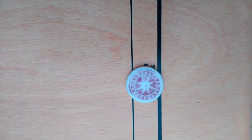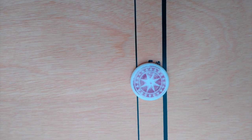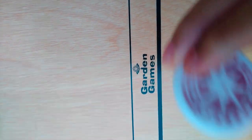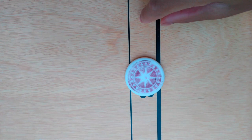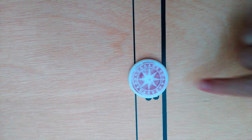When you're playing, you need the striker to shoot the discs. What you have to do is place the striker between these two base lines, and that's how you play it.